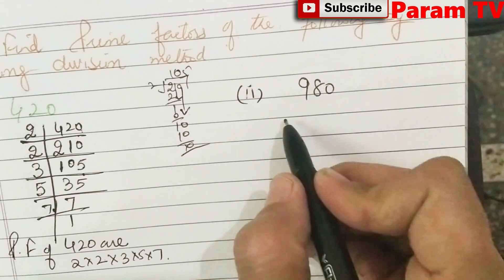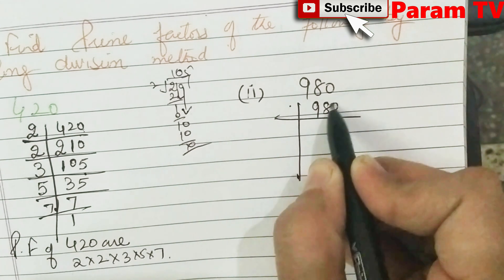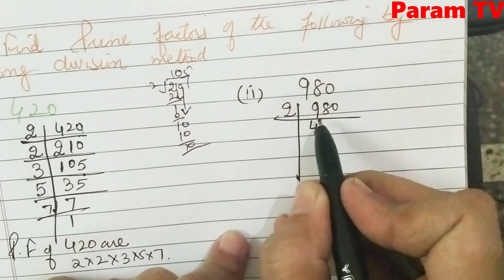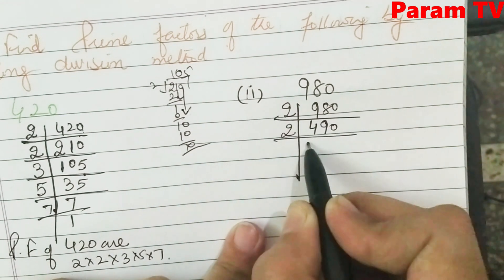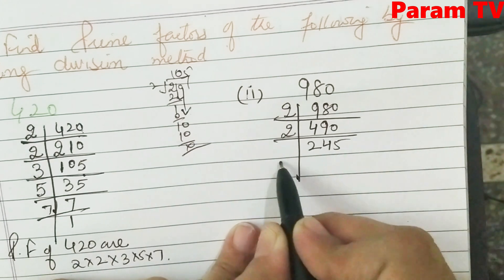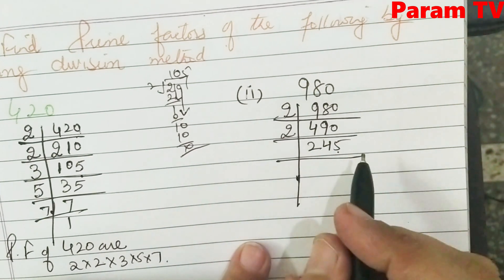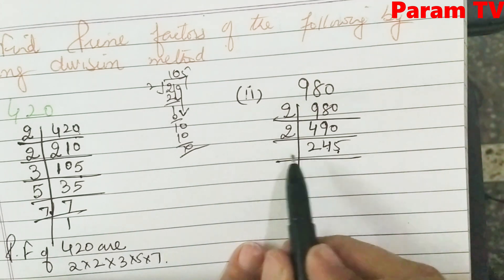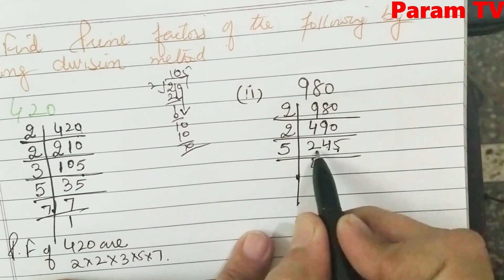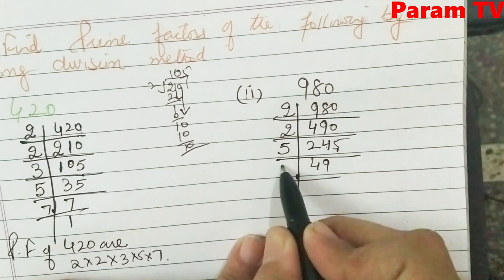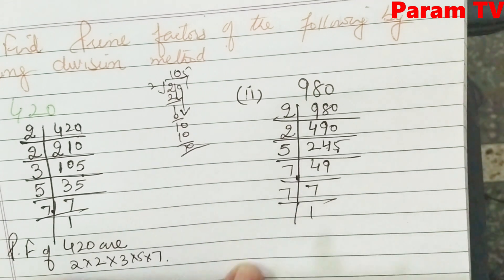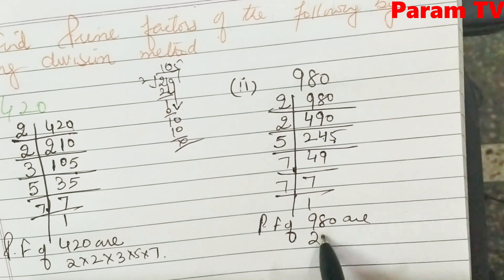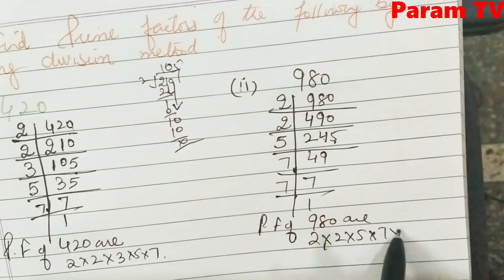Next, same way 980. The last digit is 0 so divide by 2: 2 fours are 8, giving 490. Again divide by 2: 2 twos are 4, giving 245. The last digit is 5, so 2 won't work. Check 3: sum of digits of 245 is 2+4+5=11, which is not in the 3 table. Move to 5: 5 fours are 20, giving 49. Then 7: 7 sevens are 49, giving 7. Then 7 ones are 7. So the prime factors of 980 are 2 × 2 × 5 × 7 × 7.